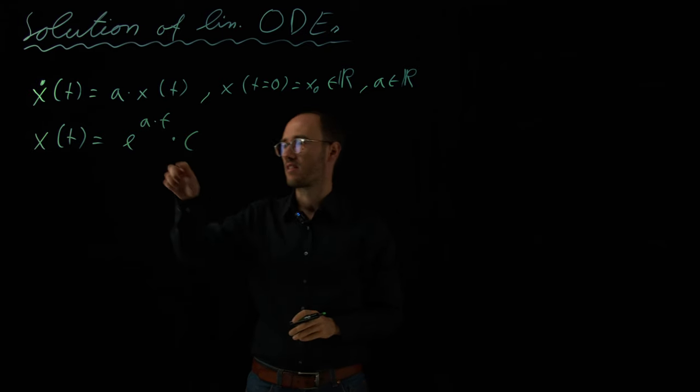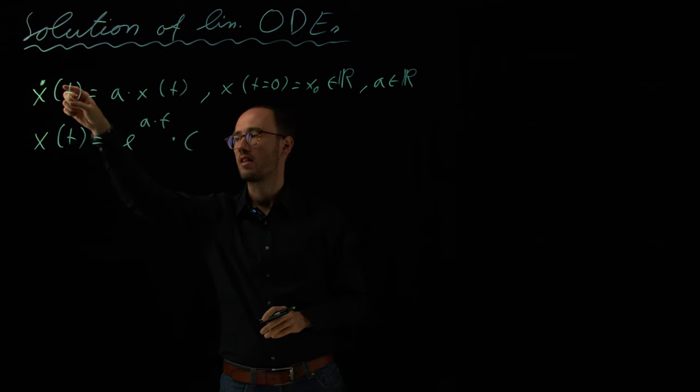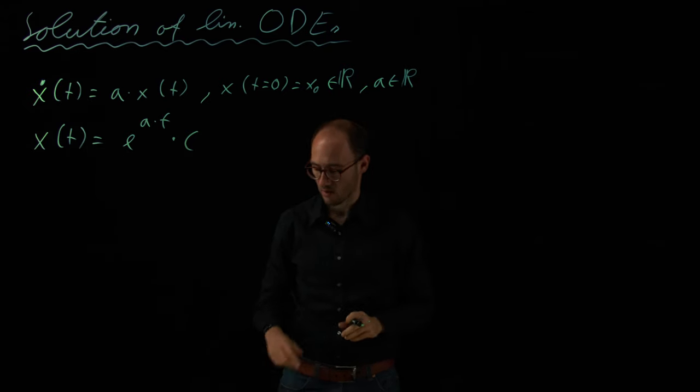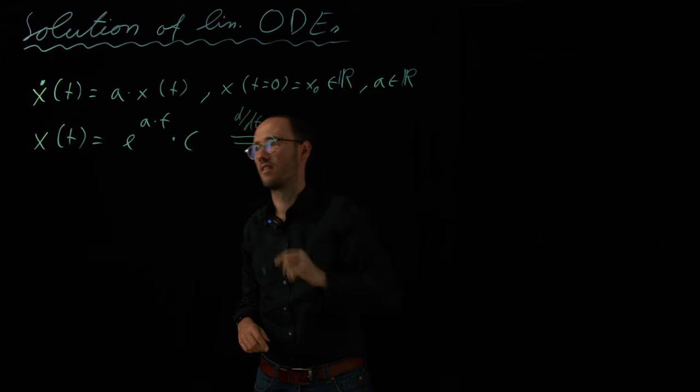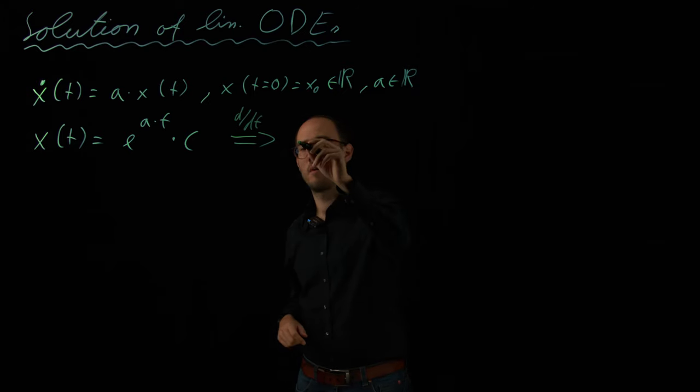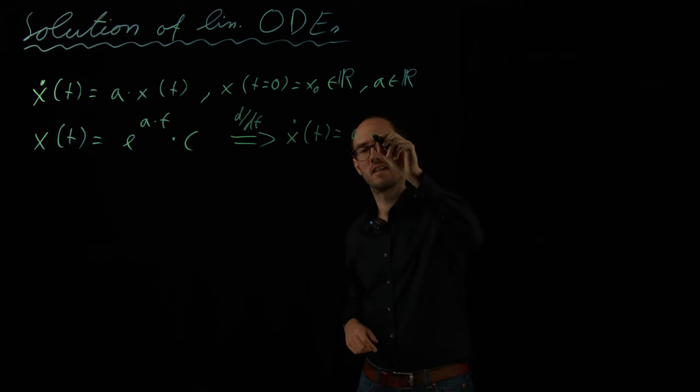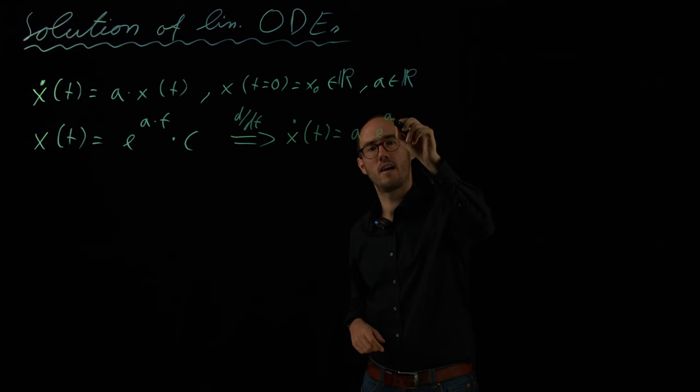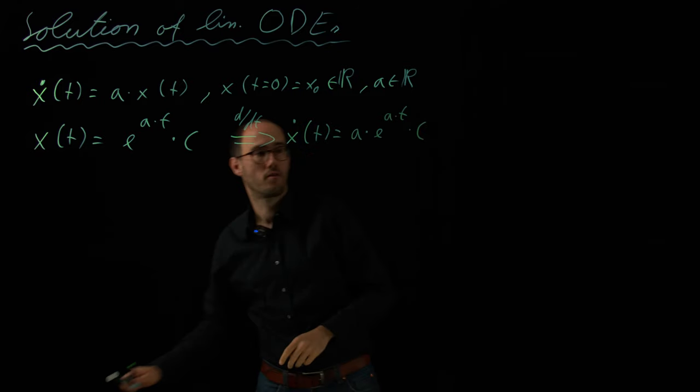We can now prove that this ansatz equation actually can solve our ODE, which we have here, by just inserting the ansatz equation into the ODE. So, we calculate d dt, so basically the left-hand side. And what we get from this, obviously, is x dot of t is equal to A times e to the power A t times C.